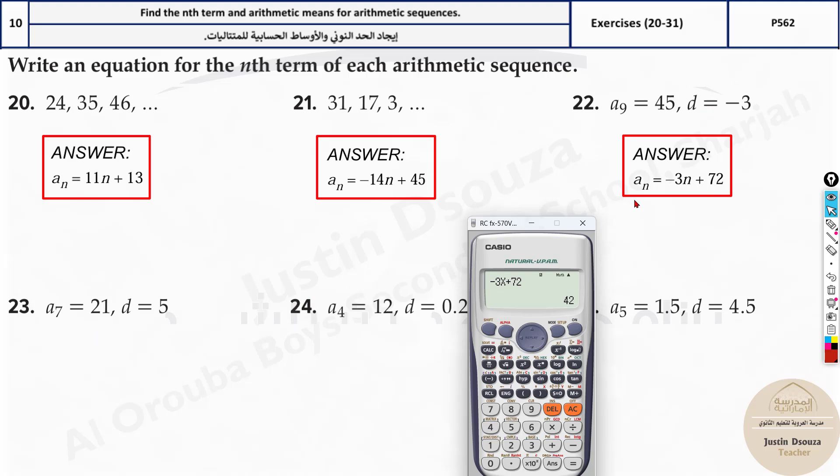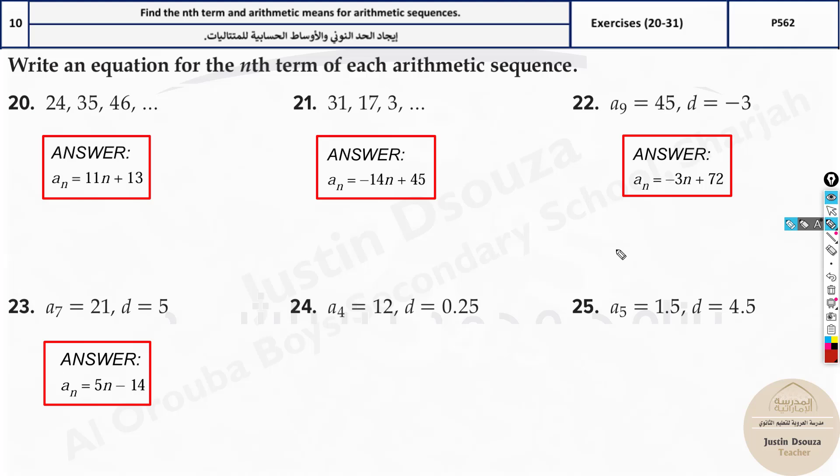Same thing can be done. Or you can use the formula over here. But when you are using the formula, in this case, because you have given the fourth term, the formula is a_n equals a_1 plus n minus 1 times d. You don't have a_1. So first you need to solve for a_1.